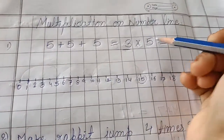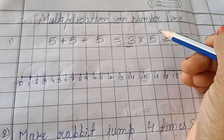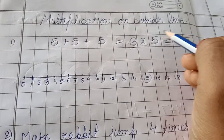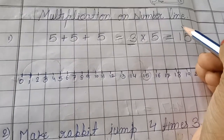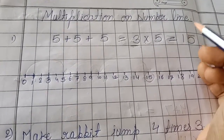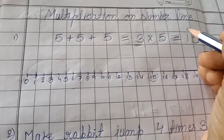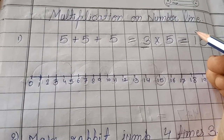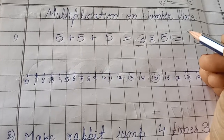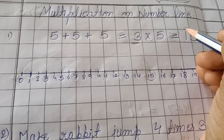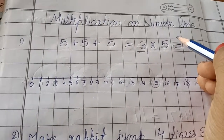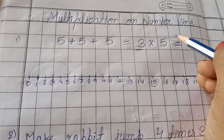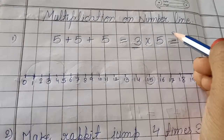Here children, we will learn multiplication on a number line. In our previous video we have learned addition and subtraction on a number line. So let us understand this with some examples.